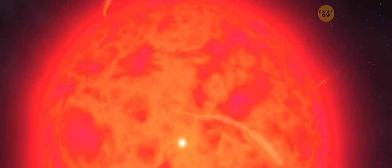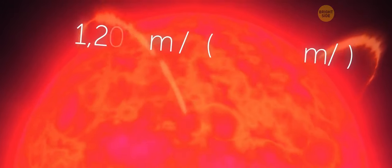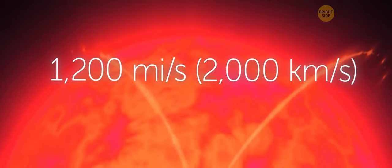Arcturus is now so close that you can even see storms of hot plasma on its surface. There are periodic outbursts and mass ejections. Huge amounts of matter are ejected from the surface of the star at speeds of up to 1,200 miles per second.